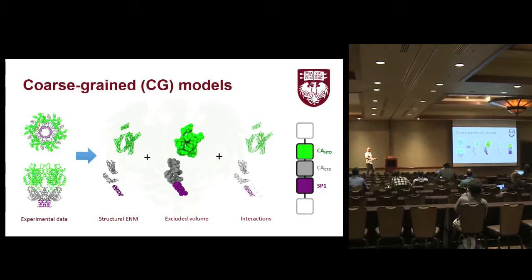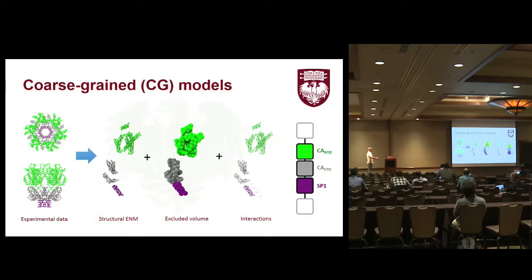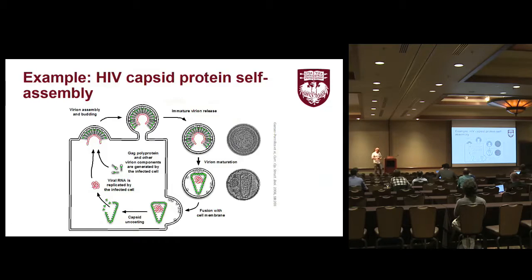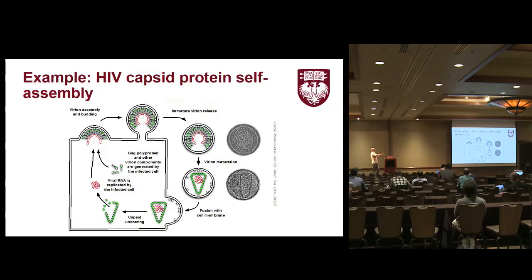The experimental data is frequently static — we can't necessarily see how it's working in a dynamic sense. But ideally, we'll have enough information in the static experimental structures to let us make at least a first-pass coarse-grained model. As an example, I'm going to talk about the self-assembly of the capsid protein inside HIV. We have a simplified diagram of the viral life cycle: it starts with a budding event where GAG molecules congregate at the cell surface, form a spherical budding site, which is removed from the cell. This virion — the spherical thing that moves away — is actually carrying the infection to other cells.